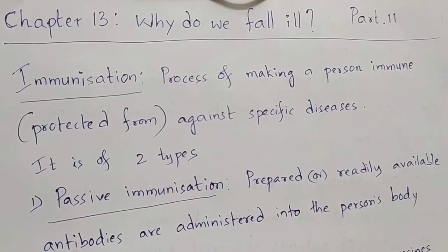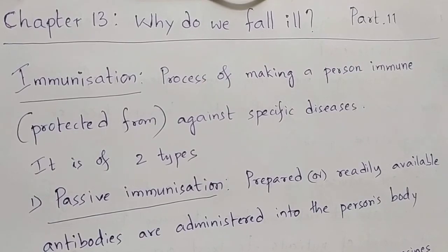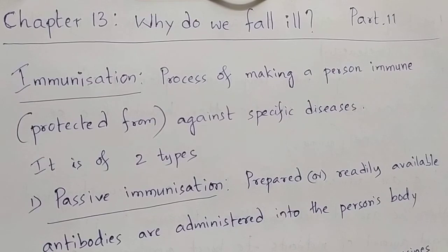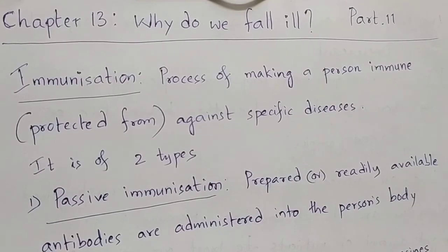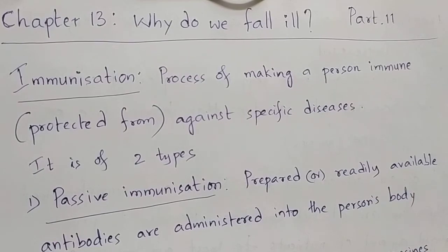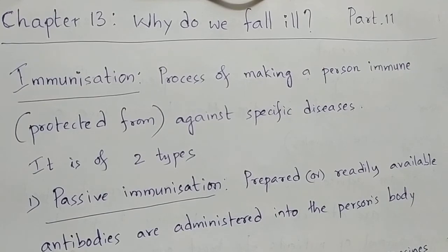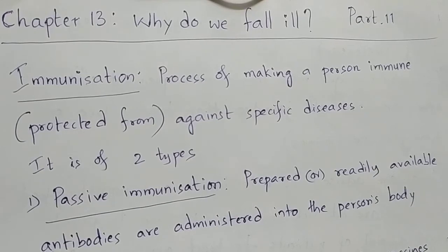What is immunization? Immunization is a process of making a person immune. In Latin language, 'immunis' means exempt from. The system that makes us exempted from diseases — not getting diseases — is called the immune system. So immunization is the process of making a person immune, protected from or against specific diseases.